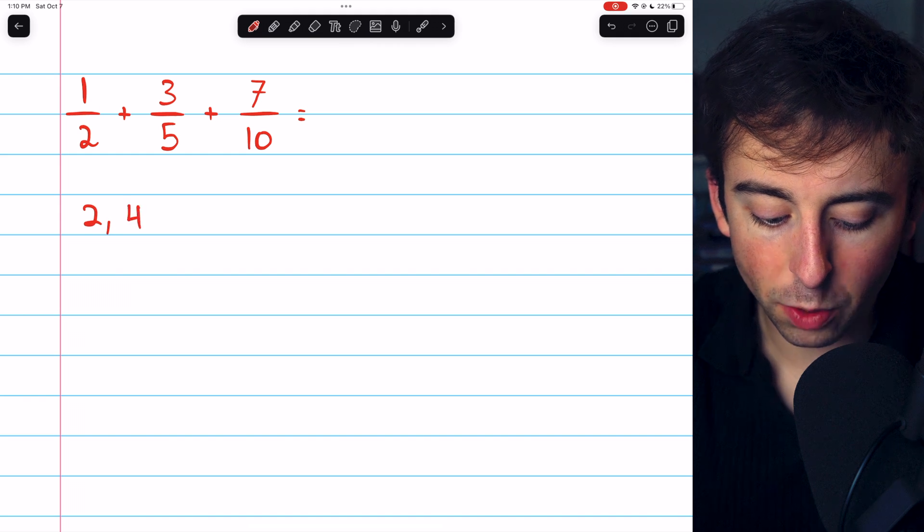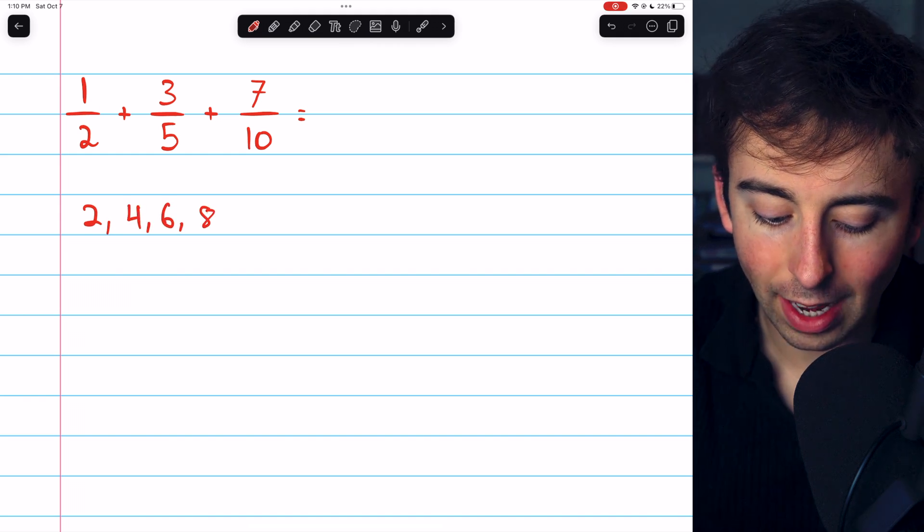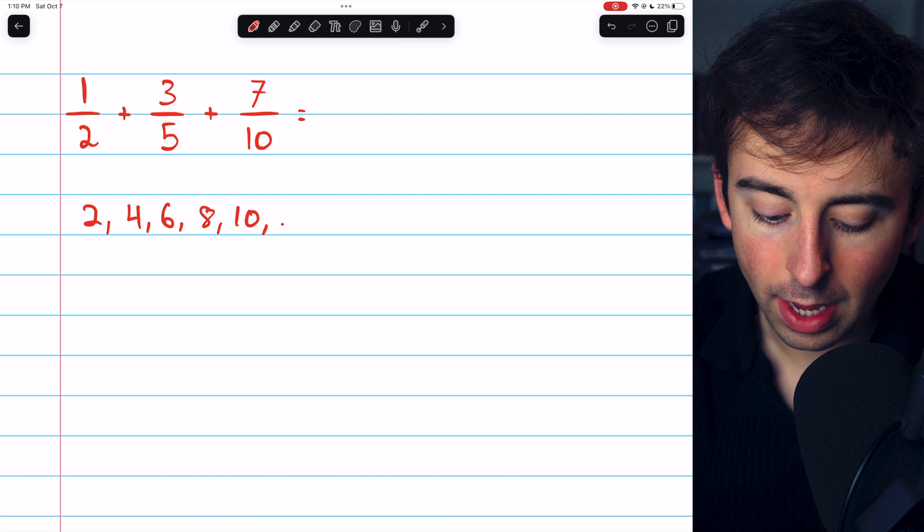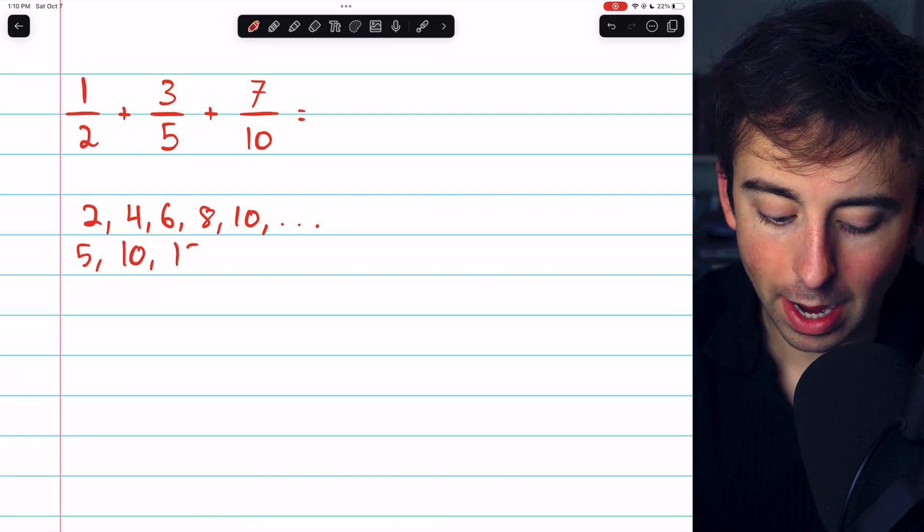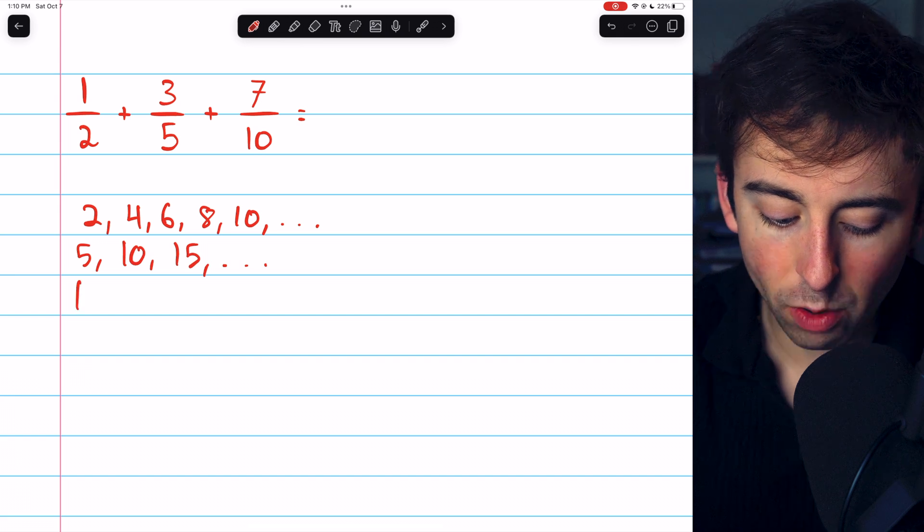If we list out the multiples of 2, we get 2, 4, 6, 8, 10, and so on. And with 5, we get 5, 10, 15, and so on. With 10, we get 10, 20, and so on.